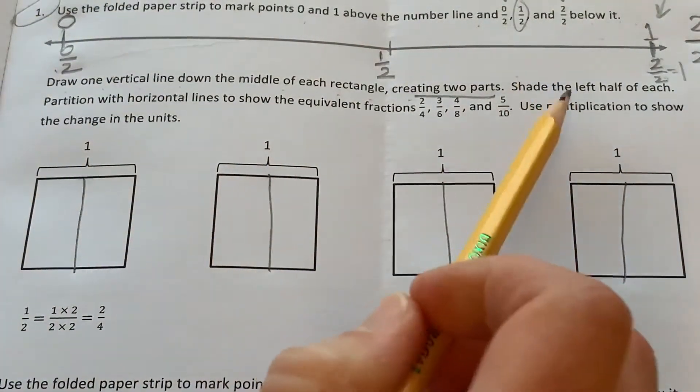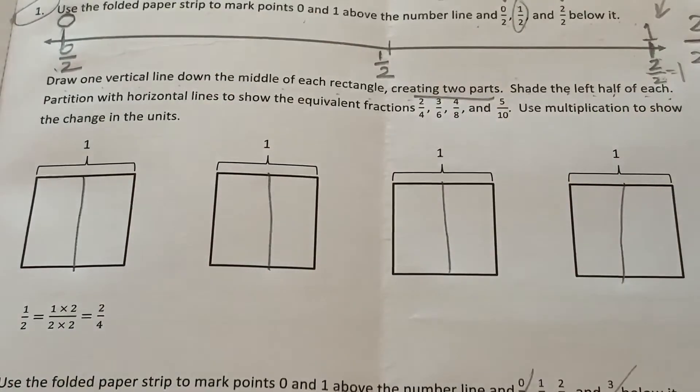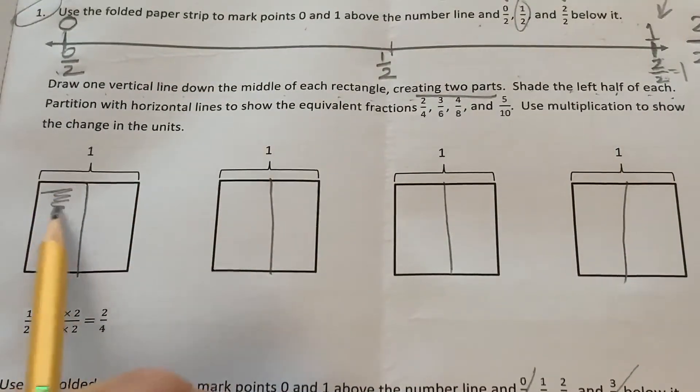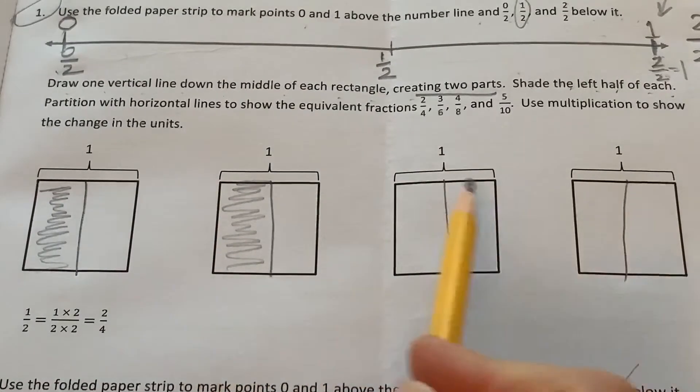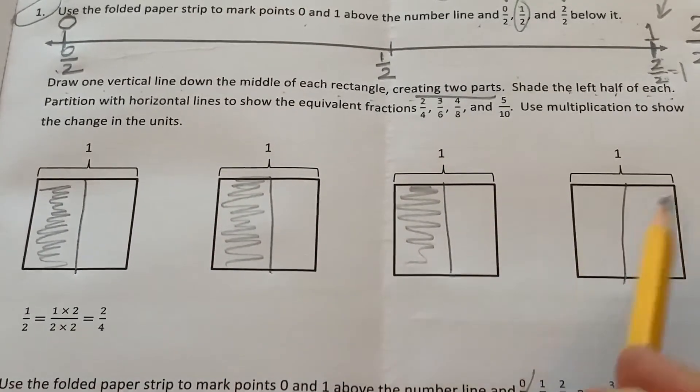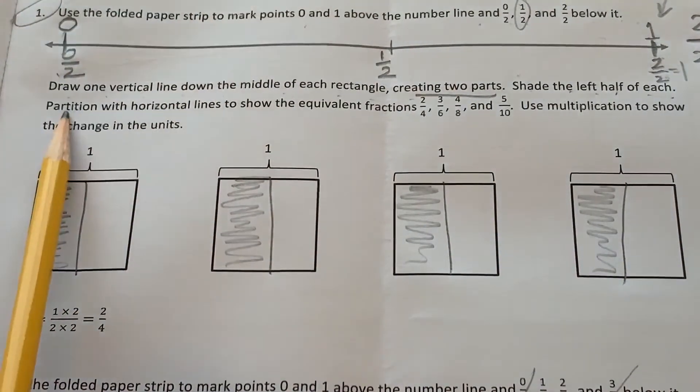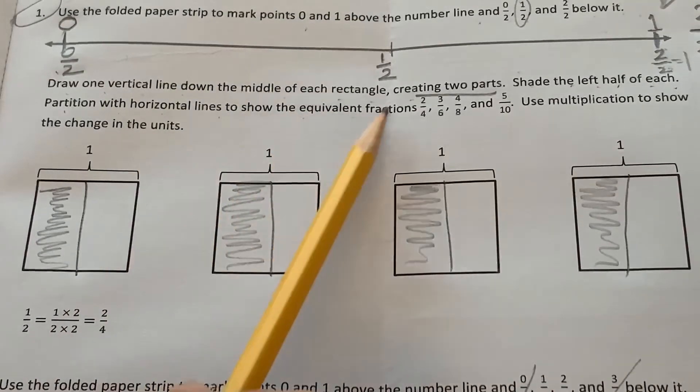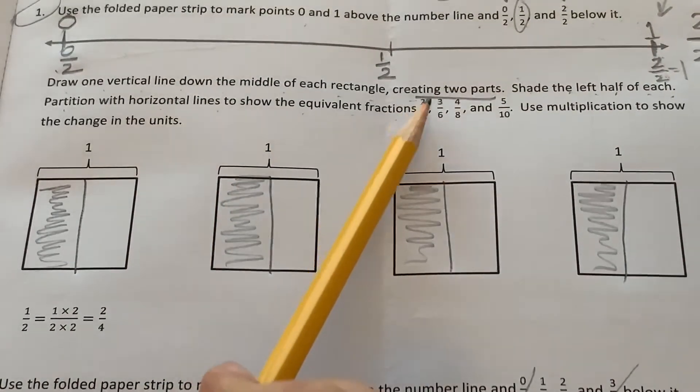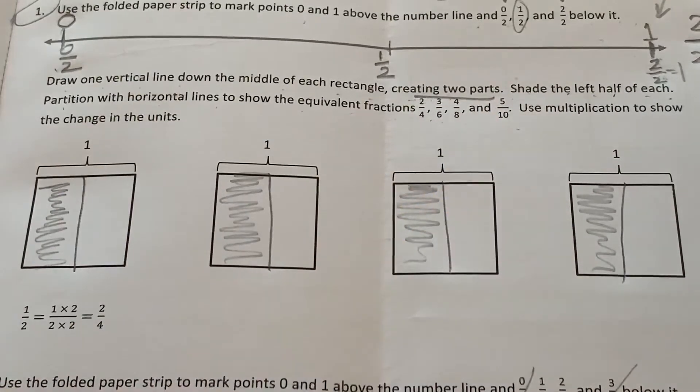Okay, now let's continue. Shade the left half of each. Okay. Quickly shade, not like a really nice coloring job. Fast shade. Partition with horizontal lines to show the equivalent fractions. 2 fourths, 3 sixths, 4 eighths, and 5 tenths. It's just like our warmup.